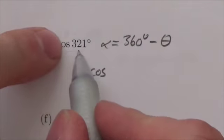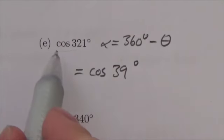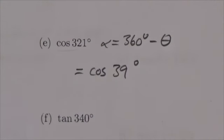So 360 minus 321 gets us a reference angle of 39 degrees, and so the cosine of 321 is equivalent to the cosine of 39.